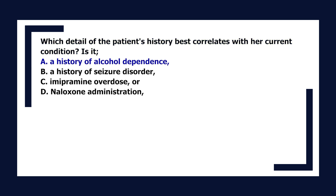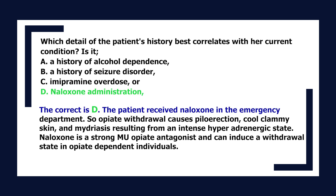Which detail of the patient's history best correlates with her current condition? A. A history of alcohol dependence. B. A history of seizure disorder. C. Imipramine overdose. Or D. Naloxone administration. The correct answer is D. The patient received naloxone in the emergency department. Opiate withdrawal causes piloerection, cool clammy skin, and mydriasis resulting from an intense hyperadrenergic state. Naloxone is a strong mu-opioid antagonist and can induce a withdrawal state in opioid-dependent individuals.